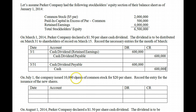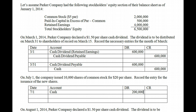On July 1st, the company issued 10,000 shares of Common Stock for $20 per share. We're not paying dividends here — we're issuing new shares. When we issue shares, we receive something, in this case $20 per share. So we debit Cash: 10,000 shares times $20 gives us $200,000 in cash.